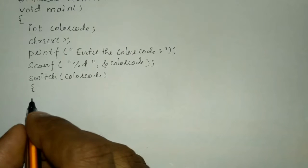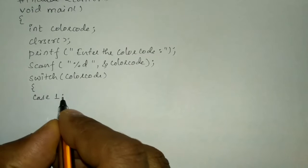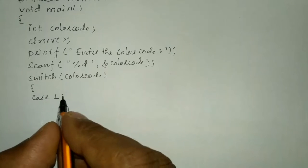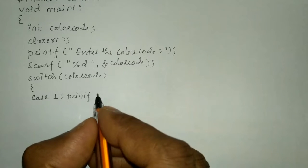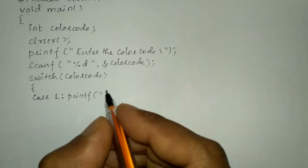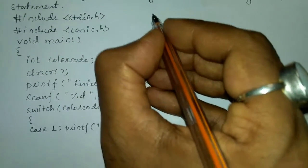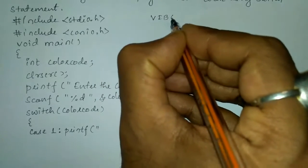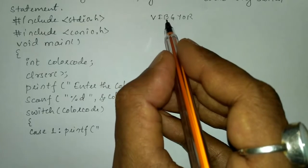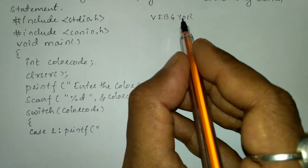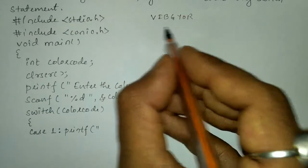Here we're going to write case labels. Case is a keyword. We know the colors of the rainbow — in short, VIBGYOR: V is violet, I is indigo, B is blue, G is green, Y is yellow, O is orange, and R is red. We are going to use all of them.